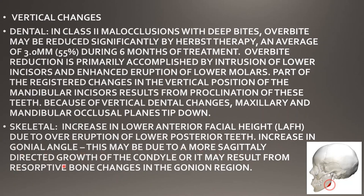The increase in the gonial angle may be due to more sagittally directed growth of the condyle. This is the gonial angle — when this angle is increased, the mandible moves in a downward direction, which achieves the correction we want in Class 2 cases.